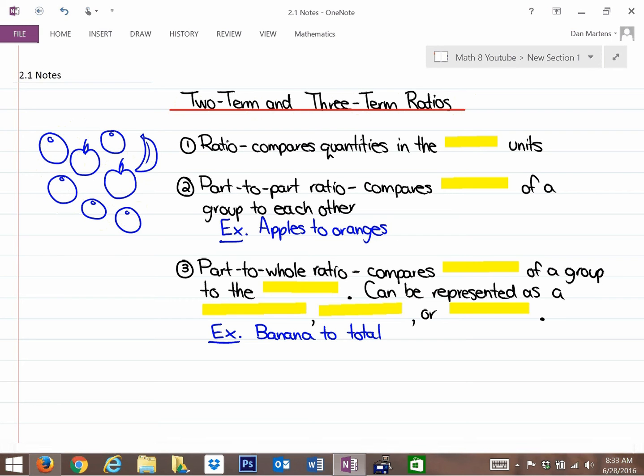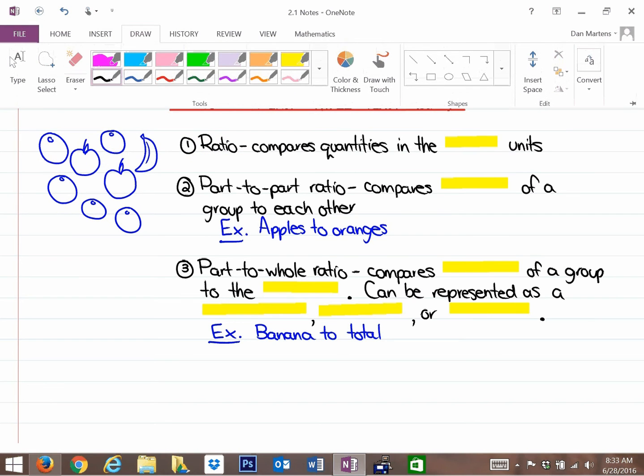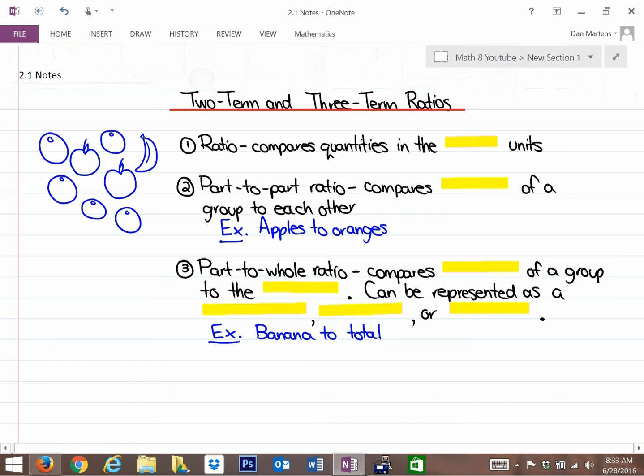So first of all, the first definition that we looked at is what is a ratio? Well, a ratio compares quantities in the same units. For example, fruit to fruit—those are the same type of units—or girls to boys, those are the same type of units because they're both humans. Whereas if you're doing kilometers to hours, those are totally different units, so kilometers per hour would not be considered a ratio because kilometers is a distance and hours is time.